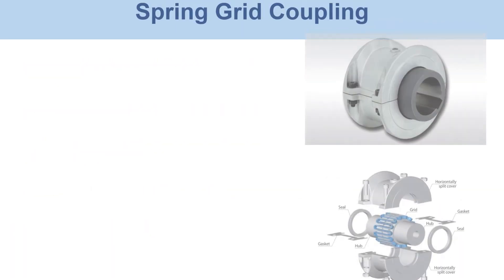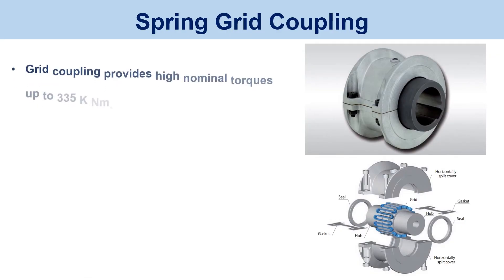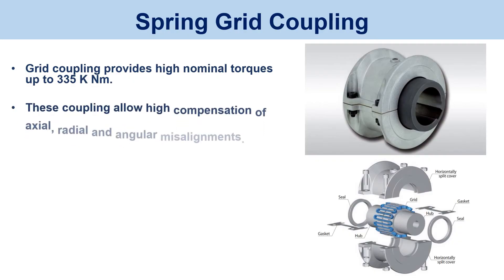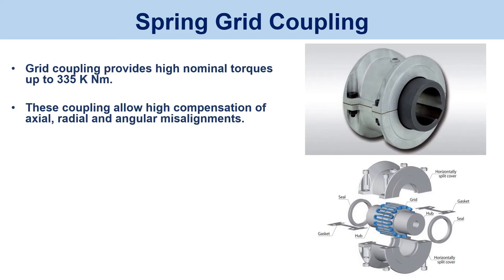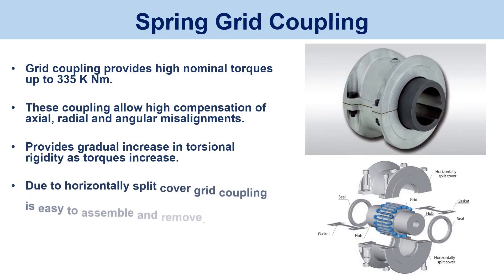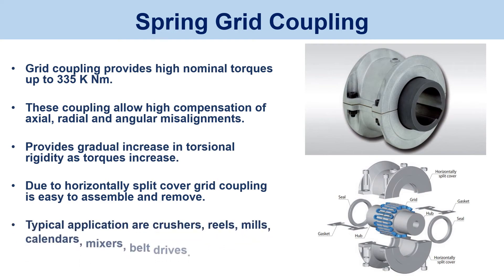Spring grid coupling. Grid coupling provides high nominal torques up to 335 kNm. These couplings allow high compensation of axial, radial, and angular misalignments, and provide a gradual increase in torsional rigidity as torque increases. Due to a horizontally split cover, the grid coupling is easy to assemble and remove. Typical applications include crushers, reels, mills, calendars, mixers, and belt drives.